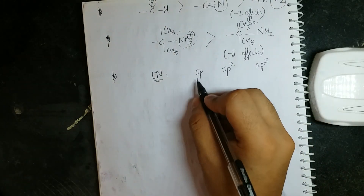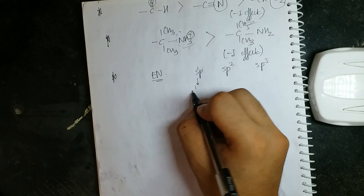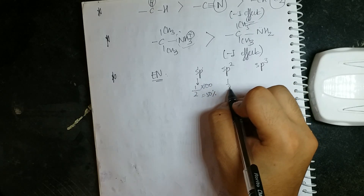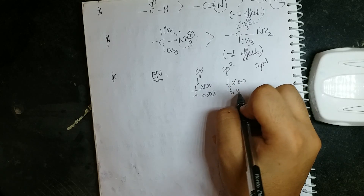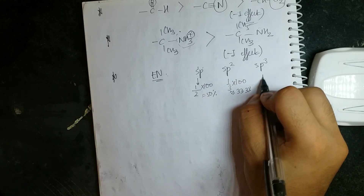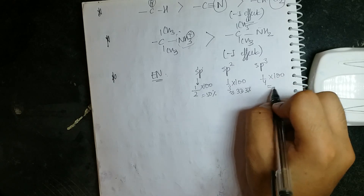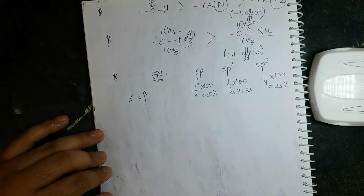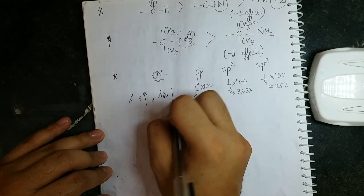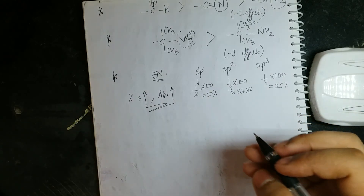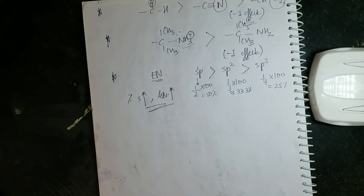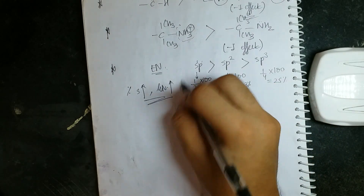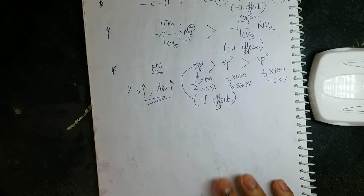Electronegativity also depends on hybridization. The percentage s-character: sp = 50%, sp2 = 33.3%, sp3 = 25%. As percentage s-character increases, electronegativity increases. Therefore electronegativity order is sp > sp2 > sp3, and the minus I effect follows the same order: sp > sp2 > sp3.